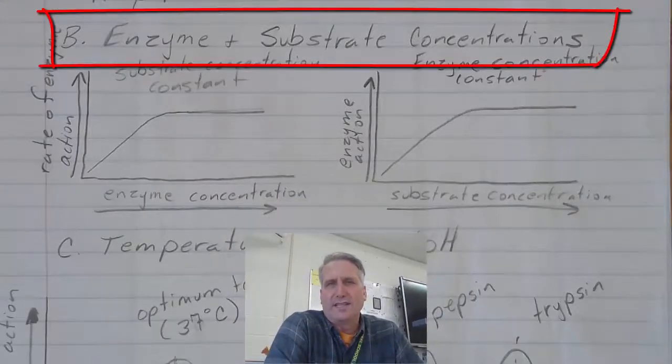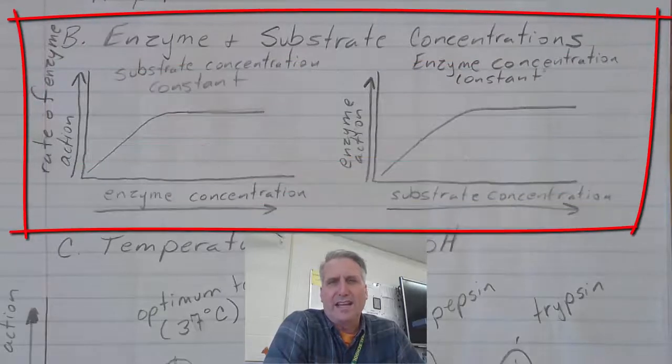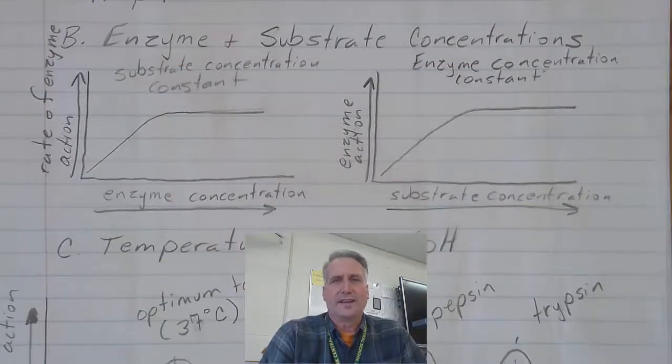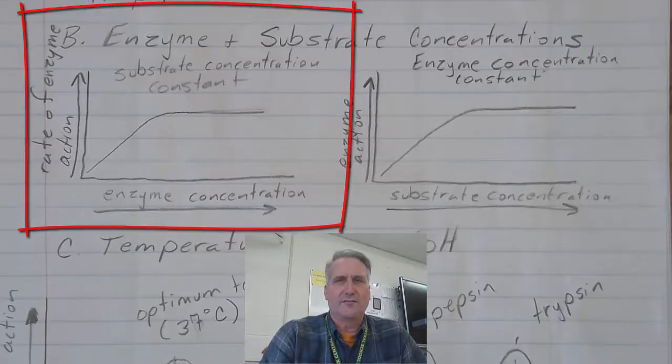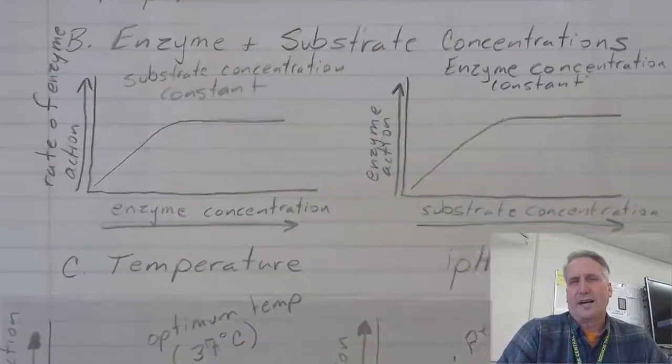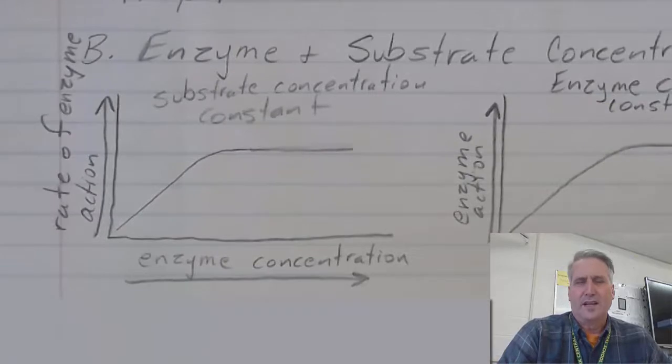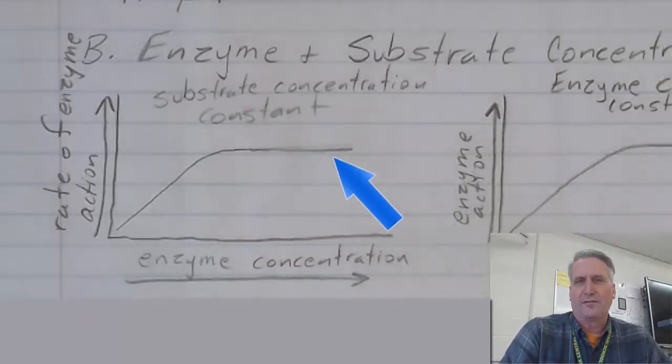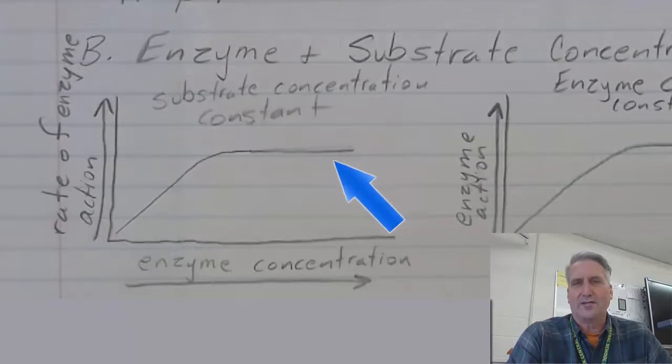Both enzyme concentration and substrate concentration have the same effect on enzyme action. Let's look at the effect of enzyme concentration first. With the substrate concentration held constant, when you increase the enzyme concentration, the rate of enzyme action increases to a certain point and then levels off. As the enzyme concentration increases, there is more enzyme available to catalyze the substrate.